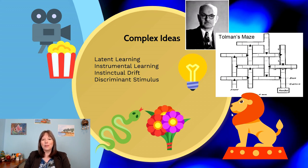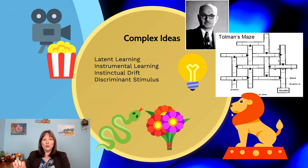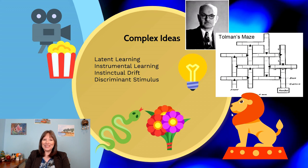Up until day 11, groups two and three performed similarly — slow, dawdling, not doing so well. Group one quickly became faster and faster from day one onward. When rewards began for group two on day 12, by day 13 they could do the maze just as fast as group one. This showed that group two was actually learning all along; we just didn't see it in their behavior between days one and eleven. They weren't displaying that learning until there was a prize at the end.